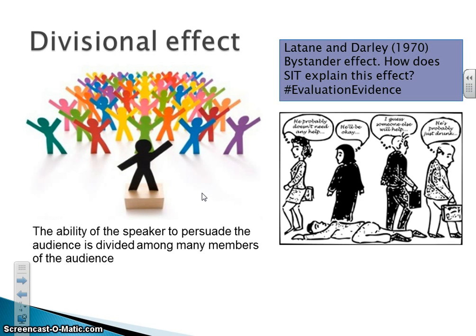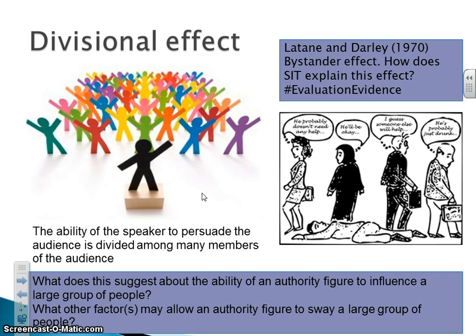It also works the other way around with a divisional effect. The ability of a speaker to persuade audience members is divided by the number of audience members present. If your teacher is having a one-to-one conversation with you, they will be much more influential than if you were in a classroom full of people. With 30 people, one person has less effect on each individual — this is what we see with the bystander effect.